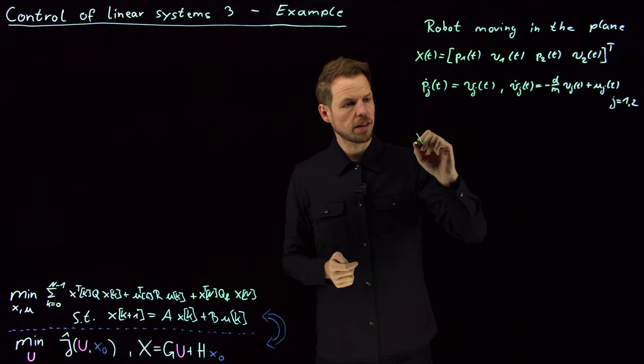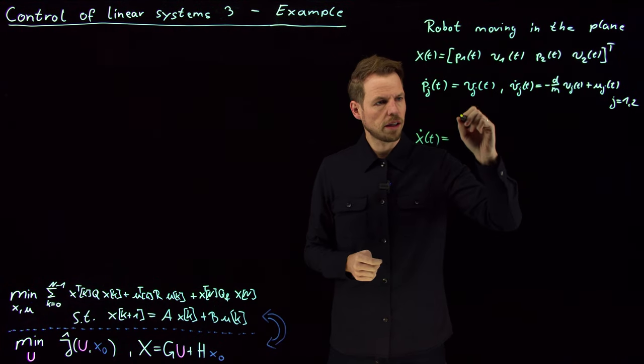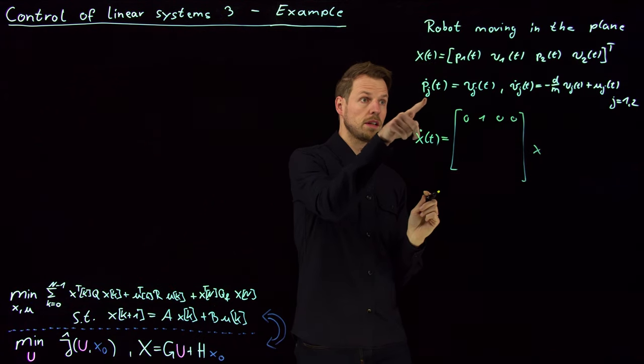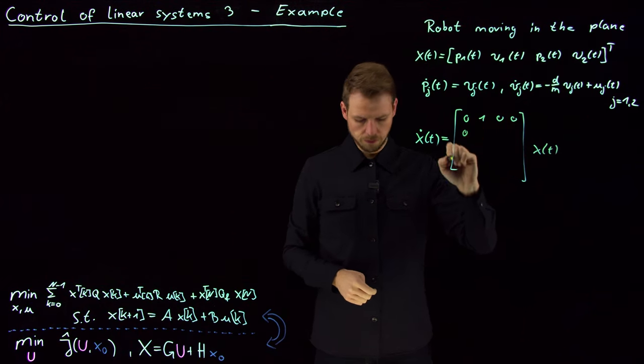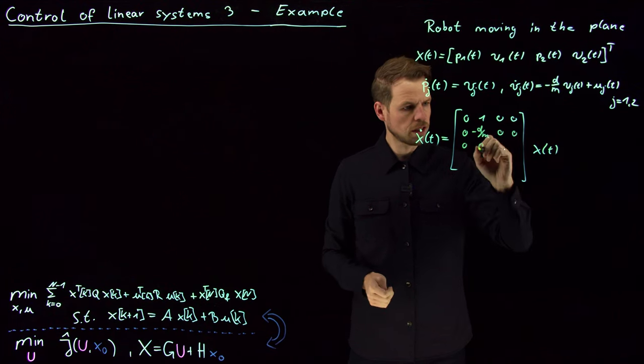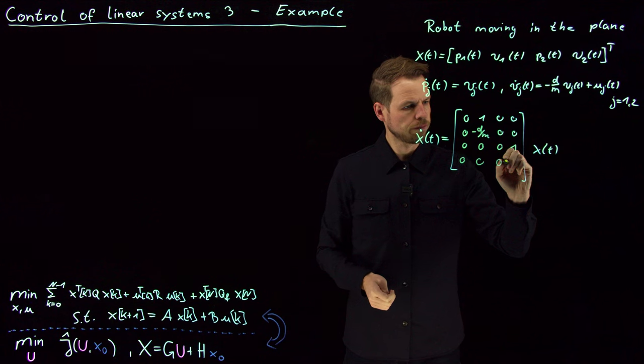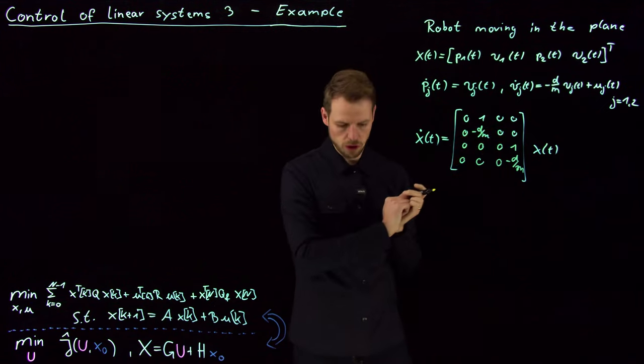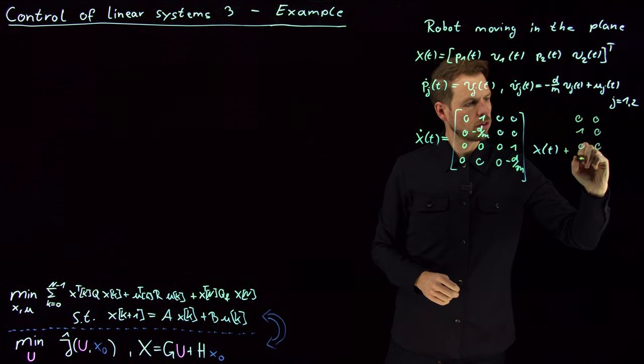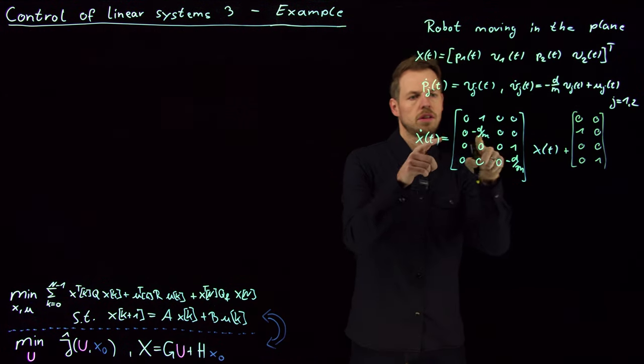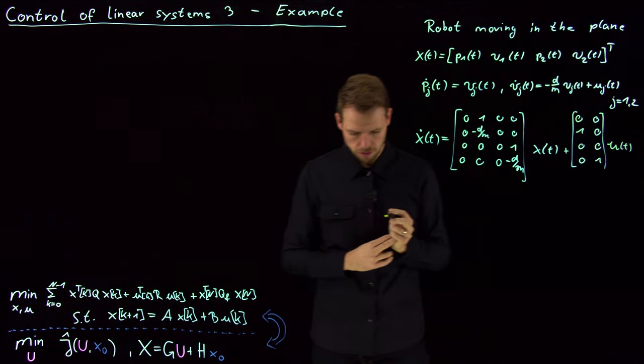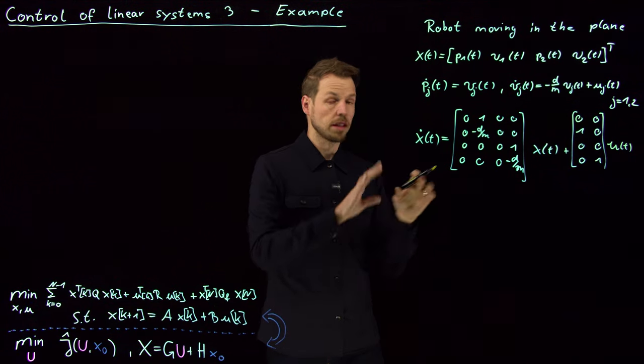What we get in sum is this ordinary differential equation: x dot of t is given by this matrix [0 1 0 0; -d/m 0 0 0; 0 0 0 1; 0 0 -d/m 0] times x. So the change in position one is the velocity one, and we have the friction term d over m. This is the change in velocity. We have the same thing for our second component. What's missing obviously is the control term. So we have plus [0 0; 1 0; 0 0; 0 1] times u. So the velocity in the first direction is changed by the first control, and the velocity change in the second direction is influenced by the second control.